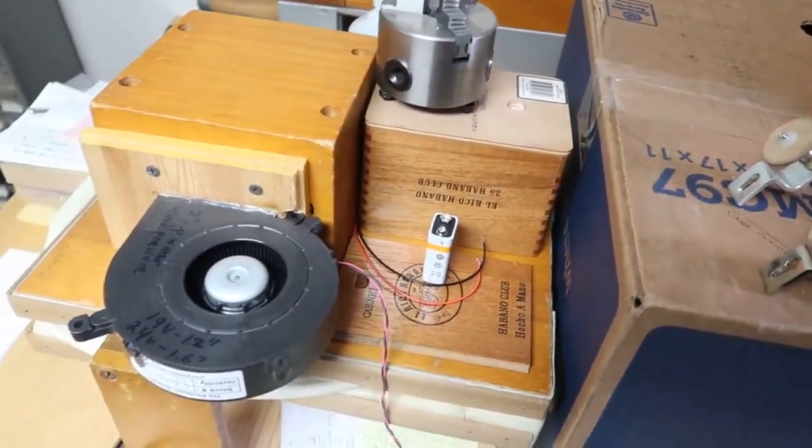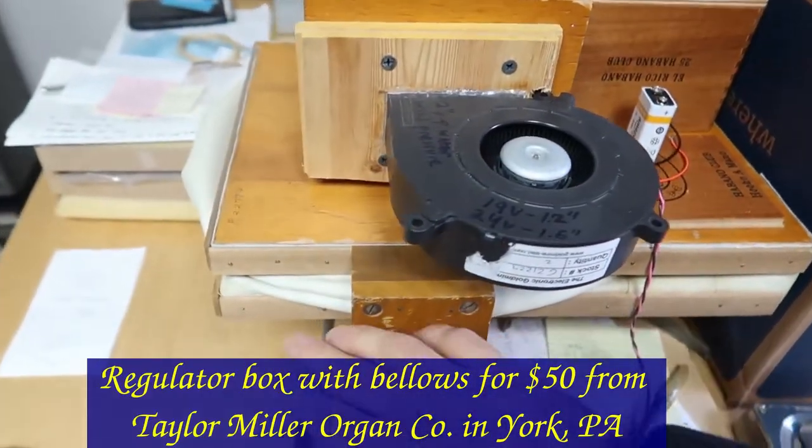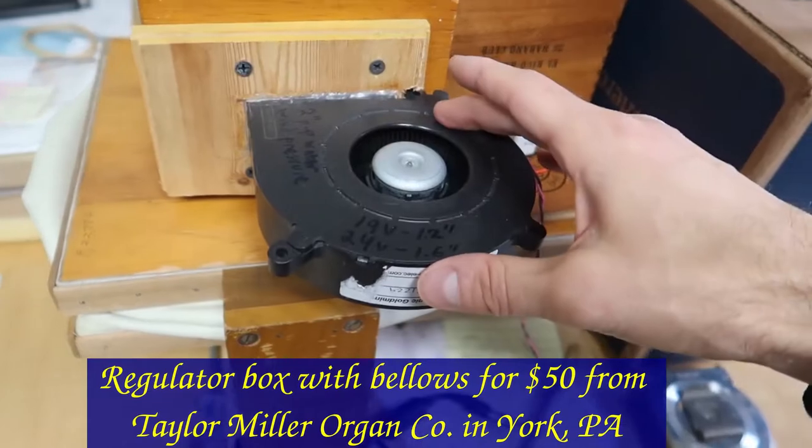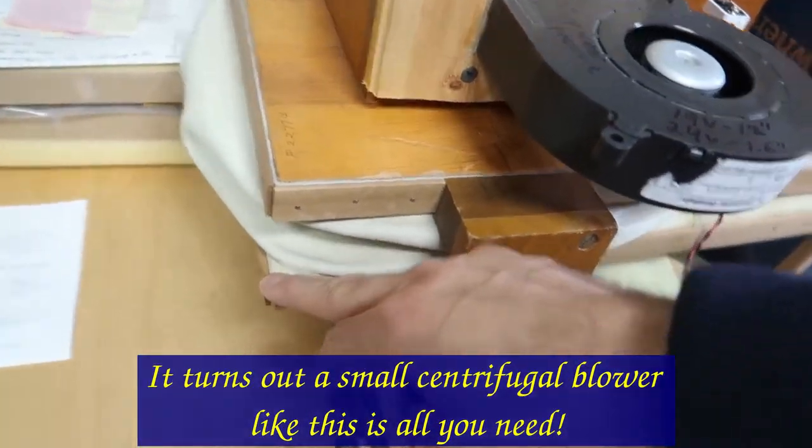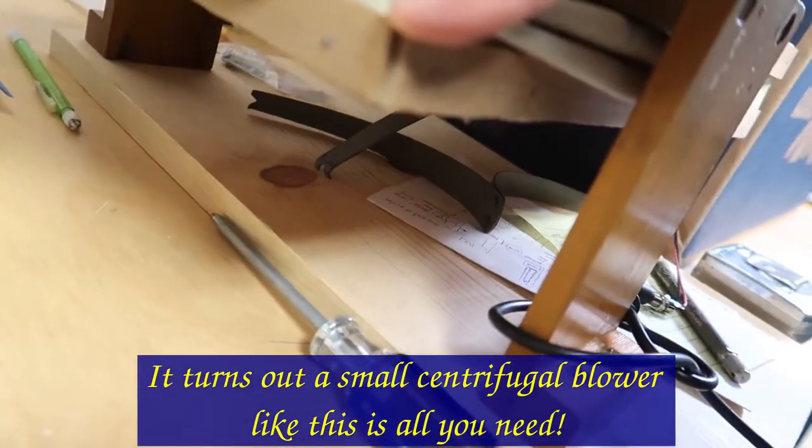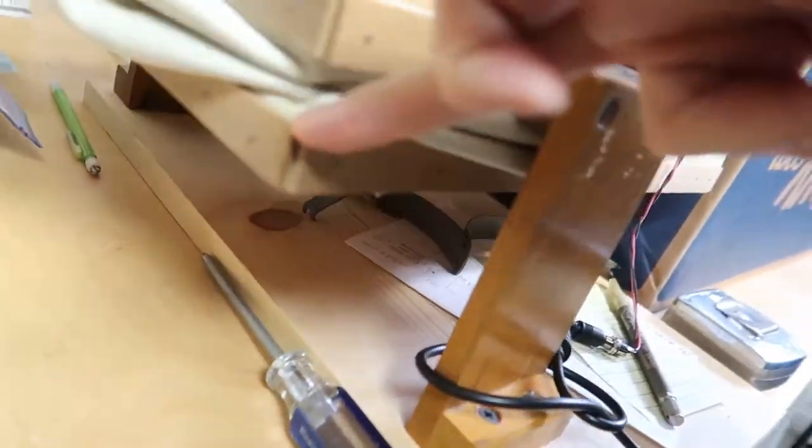And this is the air regulator in the box here. This is a little blower. It gives me 1.6 inches of wind which is just about perfect. The bellows here and there's a metal spring on the bottom to keep the force on it.